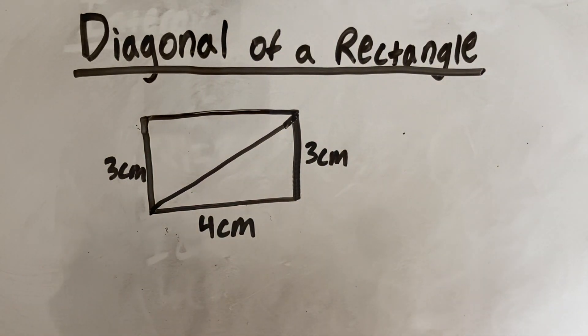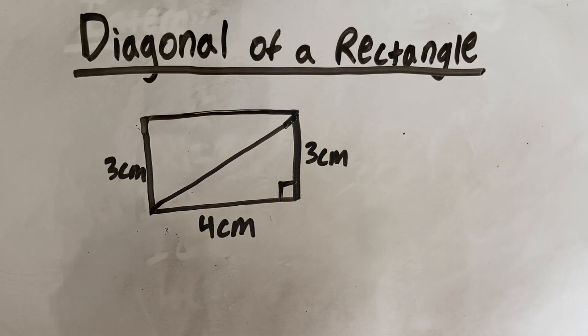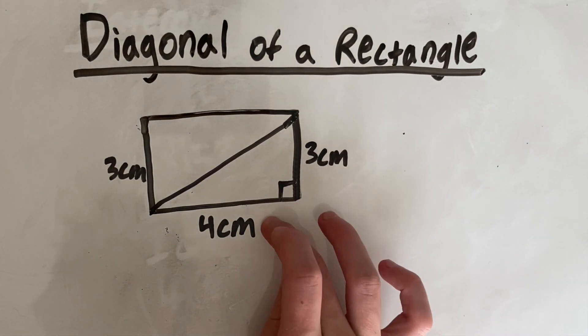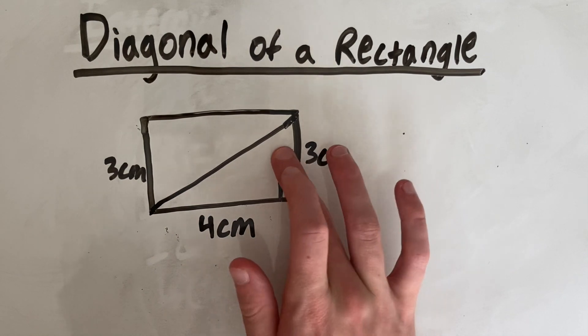So in order to find this diagonal length, we use something called Pythagoras Theory. And that's because this here is a right angle and when we're given this side and this side, two sides, the two smaller sides of a triangle, we can find the longer side.